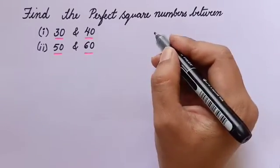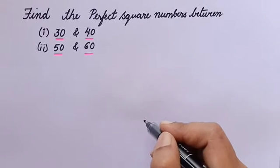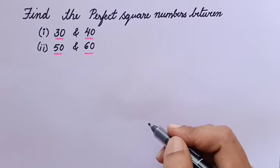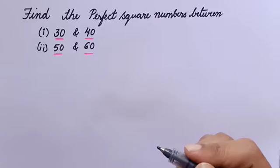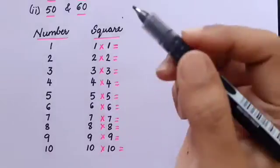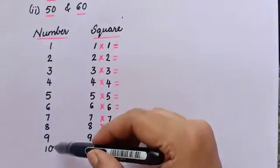First, I'll write the numbers from 1 to 10, then write the squares of those numbers so it will be easy for us to understand.